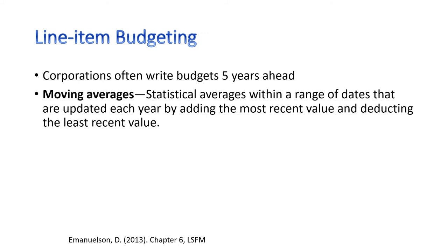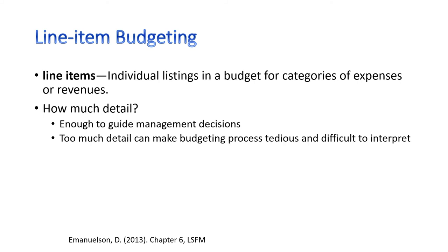Corporations often write budgets five years ahead, using moving averages — a statistical average with a range of dates updated each year by adding the most recent information — making companies less dependent on economic forecasts to predict revenue. Line items are simply the individual listings in a budget: different categories of expenses. The level of detail depends on the organization and management. Some might just say 'supplies' where others might list the type of supplies. You need enough detail to guide management decisions, but too much detail makes the process tedious and difficult to interpret.